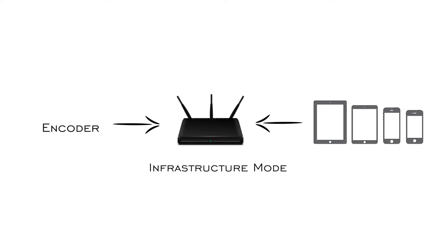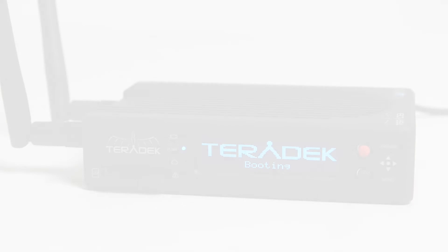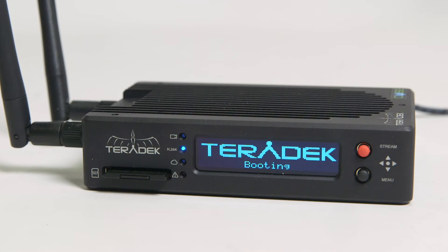You will need a router, and if necessary, multiple video sources and encoders. To make it simpler, we're just going to be using one encoder and one video source. First, as usual, make sure your video source is connected and the Cube is powered on.